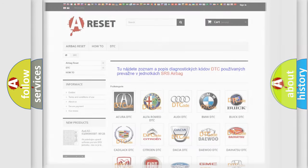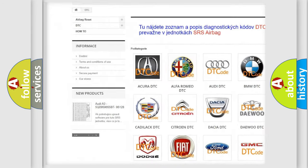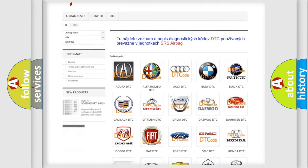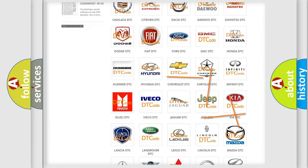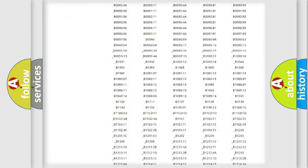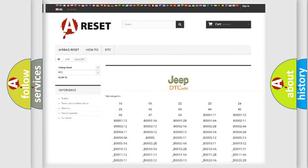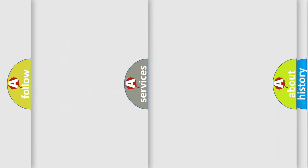Our website airbagreset.sk produces useful videos for you. You do not have to go through the OBD2 protocol anymore to know how to troubleshoot any car breakdown. You will find all the diagnostic codes that can be diagnosed in Jeep vehicles, and many other useful things.